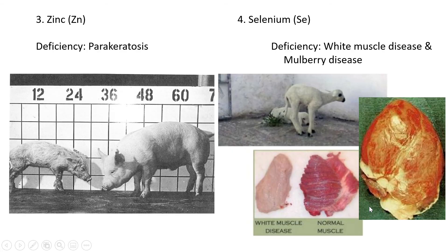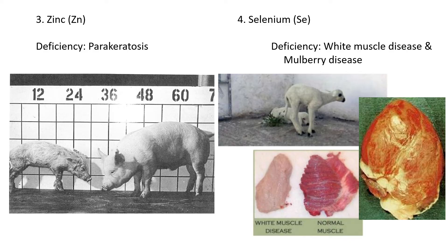The third mineral is zinc. If there is not enough zinc in the animal's body, it can cause parakeratosis. It's a big word, but it sounds kind of like keratin — which we find in our skin, nails, and hair, same for animals. In this picture, we see a healthy pig on one side, normal height for its age, and on the other side the piglet is a little bit runted, it's got skin issues, the hair is matted and falling out — that refers to the keratin not forming. Zinc is important for healthy formation of skin and hair.